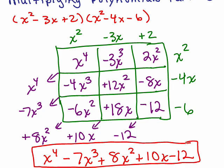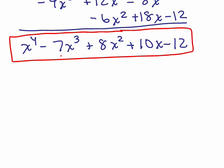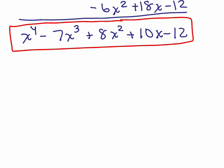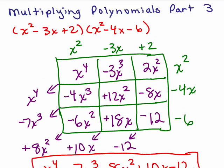Let's see if that's the same thing we got doing it the previous way: x to the fourth minus 7x cubed plus 8x squared plus 10x minus 12. The coefficients are 1, negative 7, 8, 10, negative 12 — and here it is from before: 1, negative 7, 8, 10, negative 12. Yes, I got the same answer. It's hard to see on the same page, but they are the same.